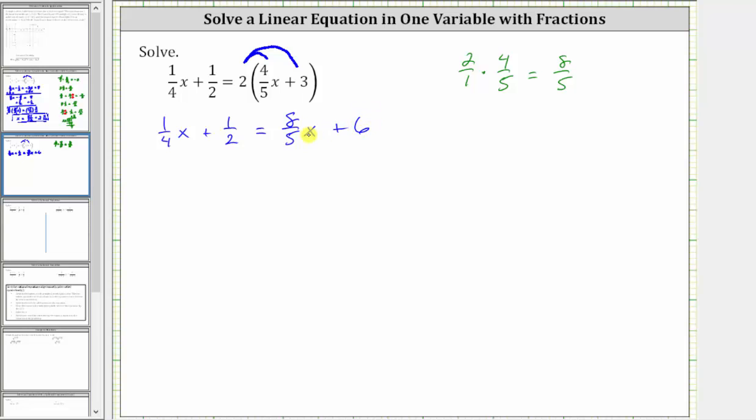And now we add or subtract to isolate the variable terms on one side of the equation. Let's isolate the variable terms on the left. Let's undo this positive 8/5 x by subtracting 8/5 x on both sides. And now we simplify.